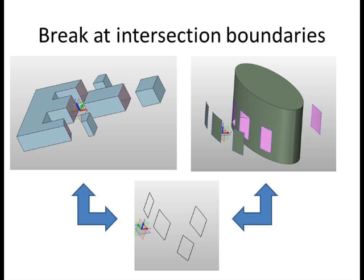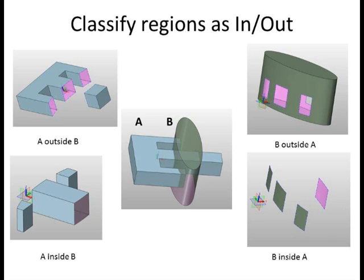Next, we classify these disjoint regions based on their location relative to the other shape. We can see that for shape A, two of the regions are outside of B, while three of the regions are inside B. For shape B, the large oval shape is outside of A, while the four rectangular shapes would all be inside of A.